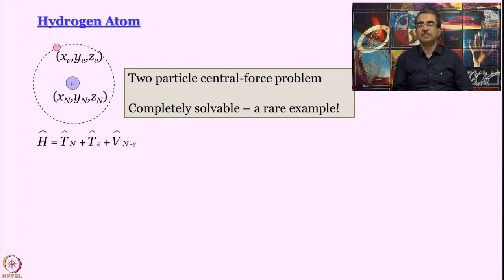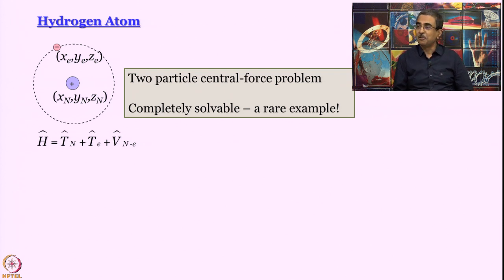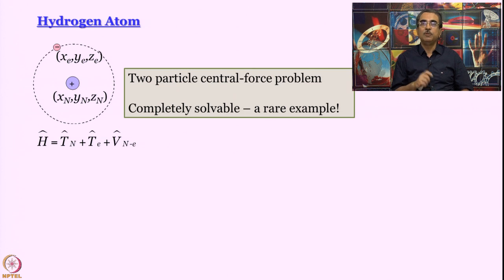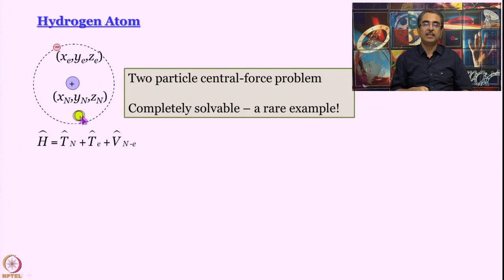After we do that, the hydrogen atom Schrödinger equation is actually completely solvable — which is unusual, since quantum chemists are often teased that they have only one equation and cannot solve it for most cases. Any quantum mechanical formulation starts with writing down the Hamiltonian. For hydrogen, it contains a kinetic energy term for the nucleus, a kinetic energy term for the electron, and a potential energy term for the attraction between them.